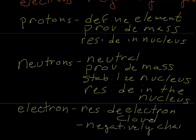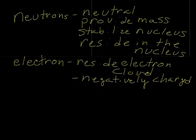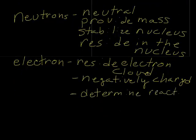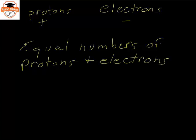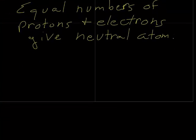Atoms have protons which are positive and electrons which are negative. When we have equal numbers of protons and electrons, we have a neutral atom. For instance, a lithium atom has three protons, and a neutral lithium atom will have three electrons.